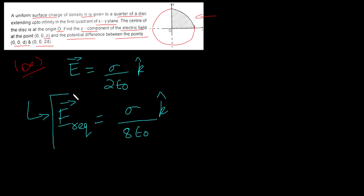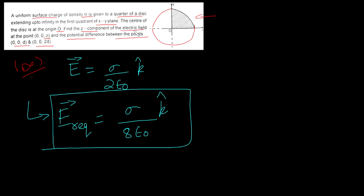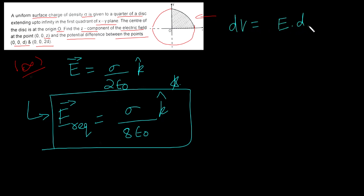I hope you understand the first part. We found the z-component of the electric field at the point (0,0,z), and it is sigma by 8 epsilon naught k-cap. Now we find the potential difference. The potential difference dV is equal to negative E dot dl.